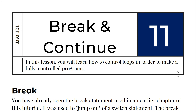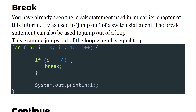In order to make fully controlled programs, what is the break statement? You have already seen the break statement used in an earlier chapter of this tutorial — it was used to jump out of a switch statement. The break statement can also be used to jump out of a loop. This example shows how jumping out of the loop takes place when i is equal to 4.